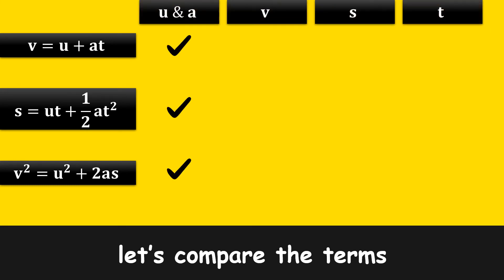If you look at the first equation, we have final velocity and time, but the displacement is missing. In the second equation, we have displacement and time, but the final velocity is missing.